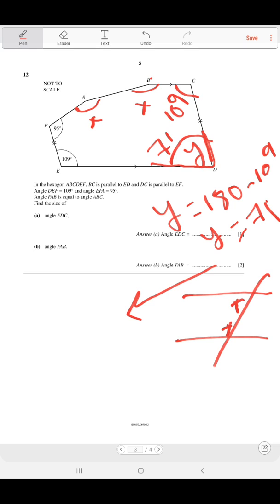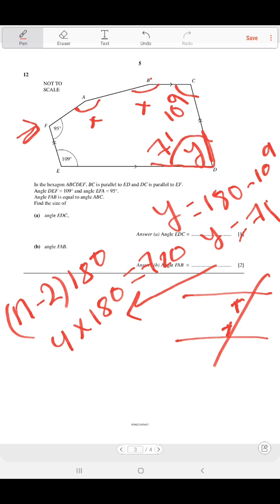Now, the angle sum of any polygon can be calculated using this formula: n minus 2 times 180. The number of sides is six, so 6 minus 2 equals 4, times 180 equals 720.